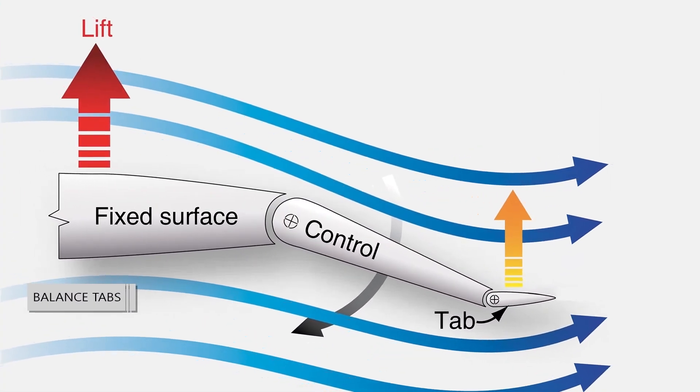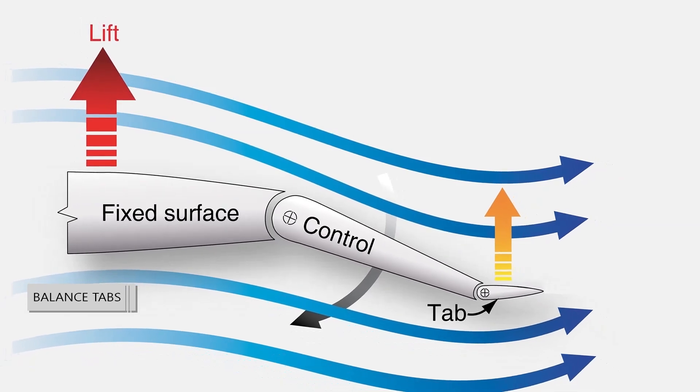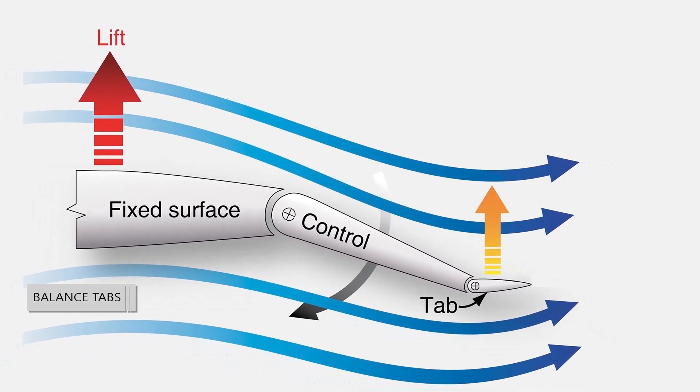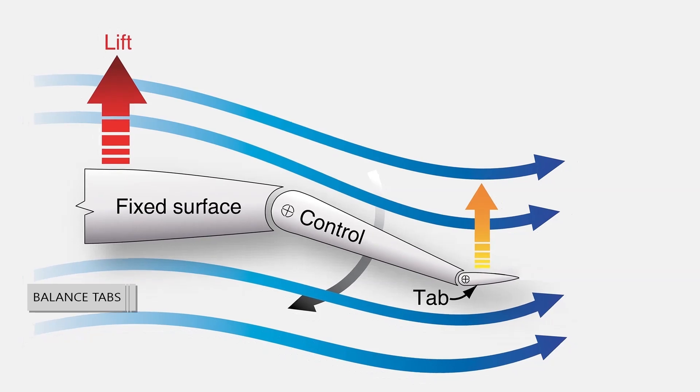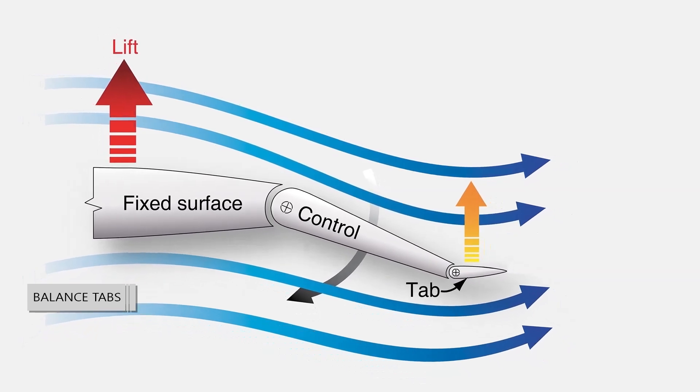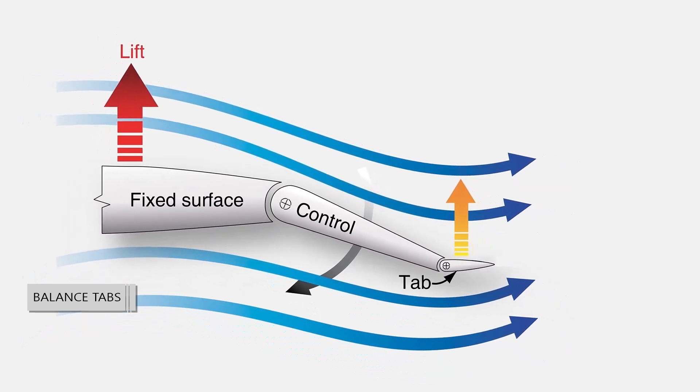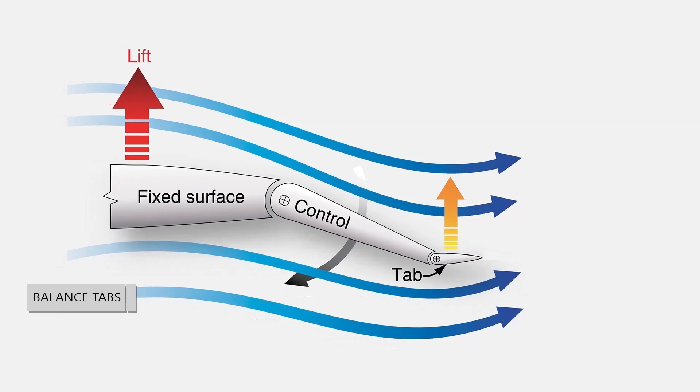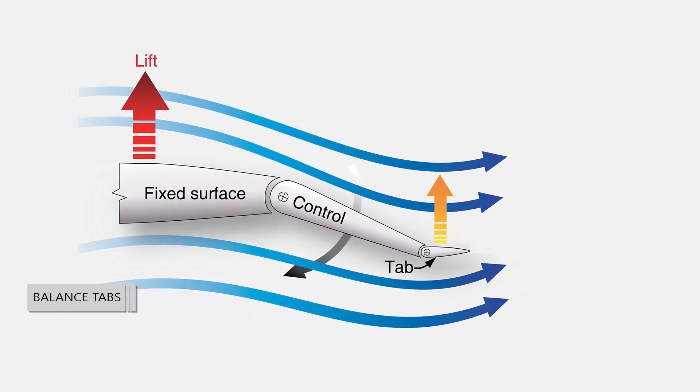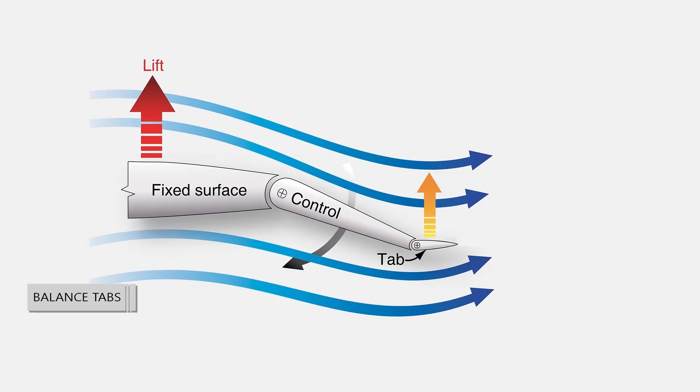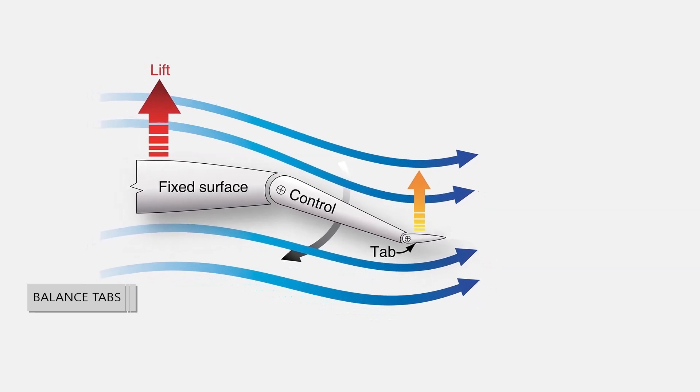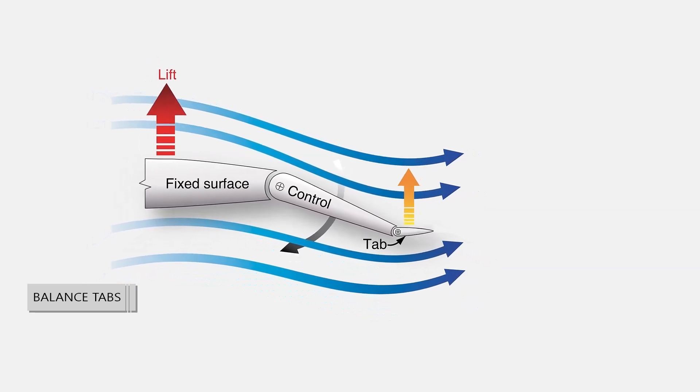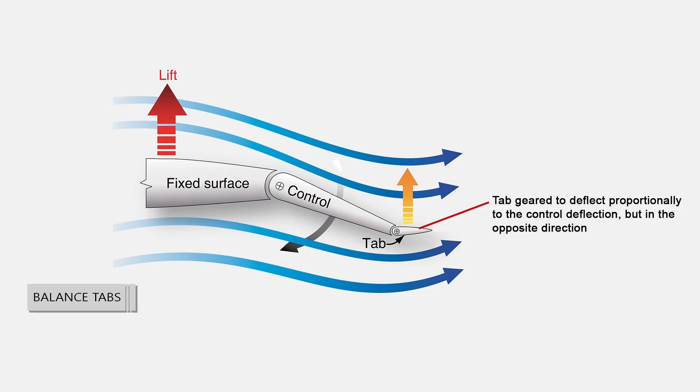The aerodynamic phenomenon of moving a trim tab in one direction to cause the control surface to experience a force moving in the opposite direction is exactly what occurs with the use of balance tabs. Often, it is difficult to move a primary control surface due to its surface area and the speed of the air rushing over it. Deflecting a balance tab hinged at the trailing edge of the control surface in the opposite direction of the desired control surface movement causes a force to position the surface in the proper direction with reduced force to do so.